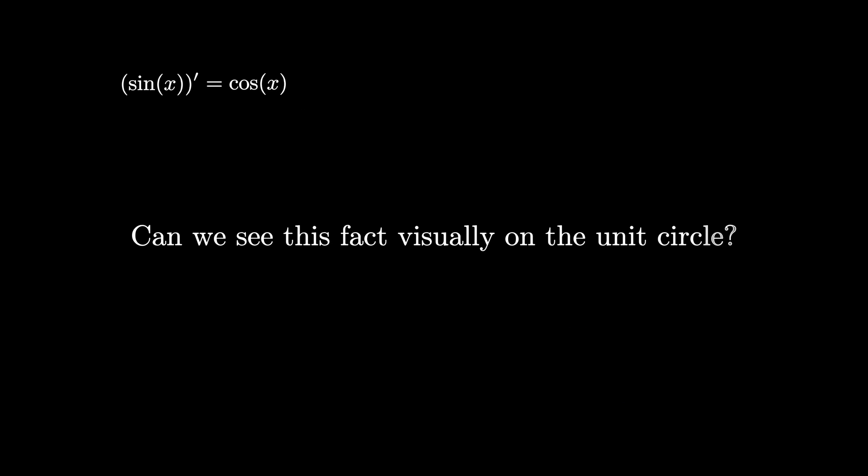Because the two important limits follow geometrically, can we just see this derivative fact visually on the unit circle? Let's find out by investigating the unit circle, but only in the first quadrant, as shown here. That is, take a radius of length 1 and draw a quarter circle in the first quadrant.